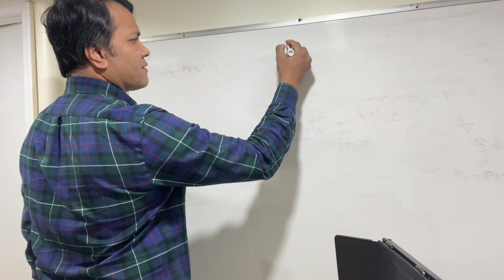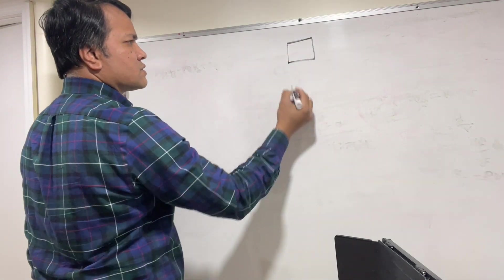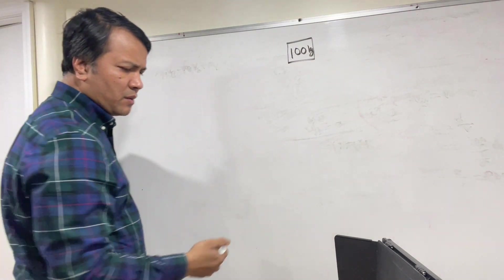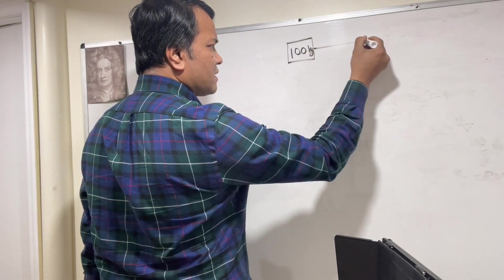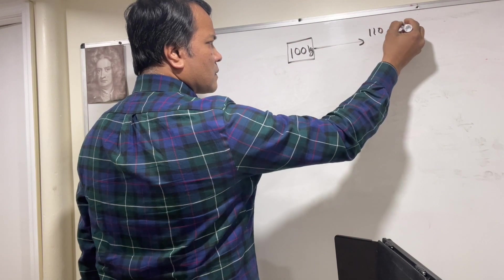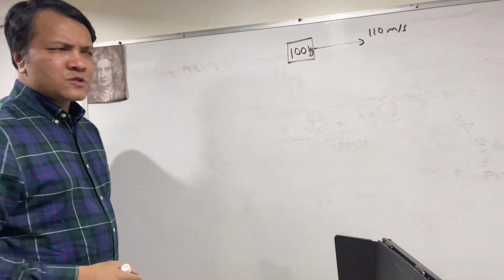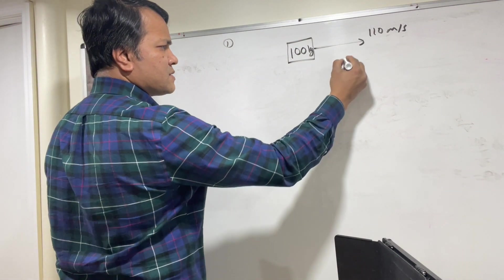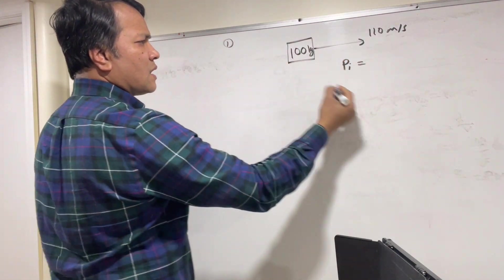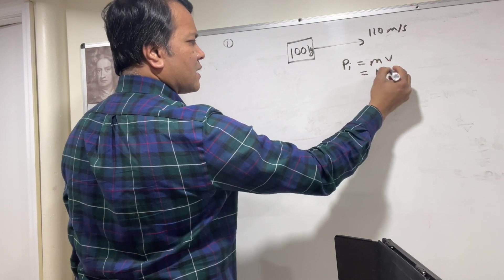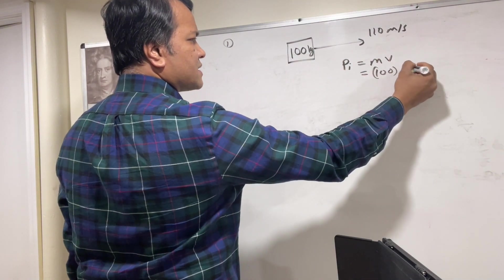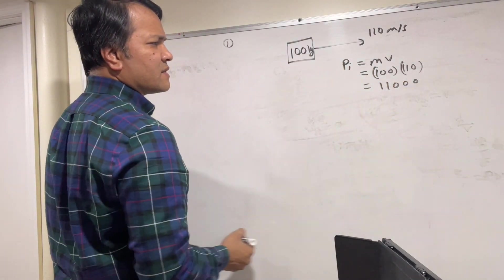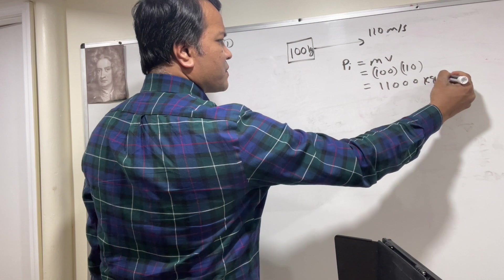Now we're going to solve problem number 2. You have a 100 kg granite that moves with 110 m/s. We have to find the momentum. Momentum P = MV, so M = 100 kg and V = 110, giving us 11,000 kilogram·meter per second. That's the momentum.